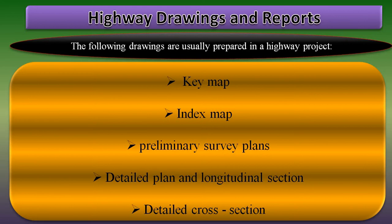The next one is the preliminary survey plan. Here, details of the various alternate alignments and all information collected should be drawn to a scale of 10 cm to 1 km up to 25 cm to 1 km. The next one is the detailed plan and longitudinal section.